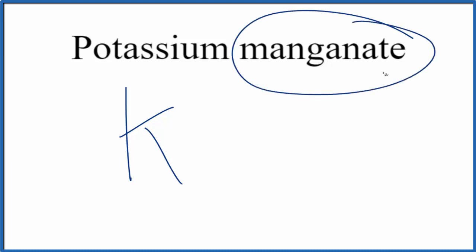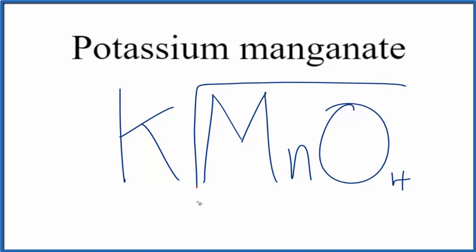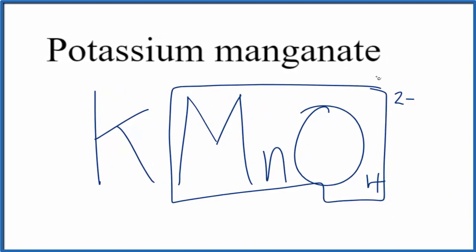For the manganate here, it ends in A-T-E, so you're not going to find that on the periodic table. You either memorize that the manganate ion, that's MnO4, and the whole manganate ion has a charge of 2-, or if you're allowed, you look it up on a table of polyatomic ions.